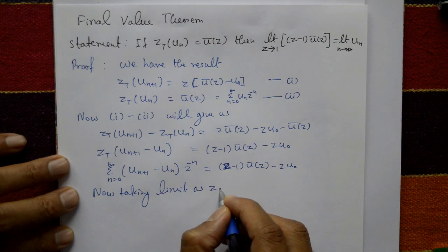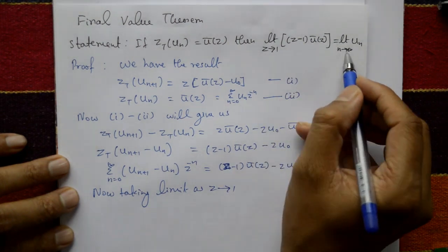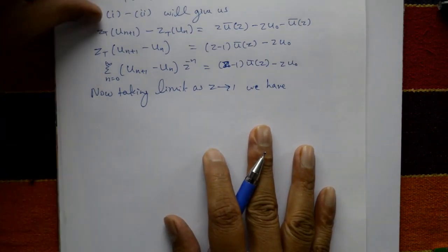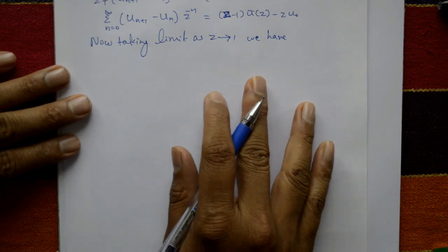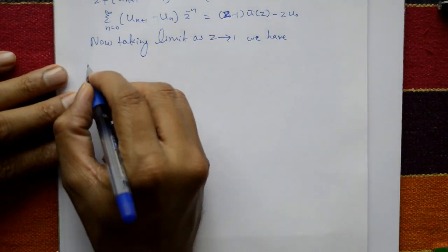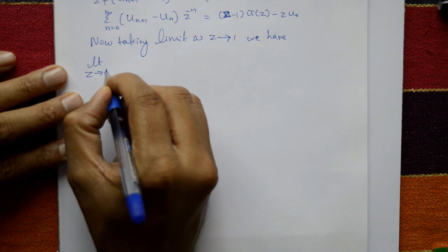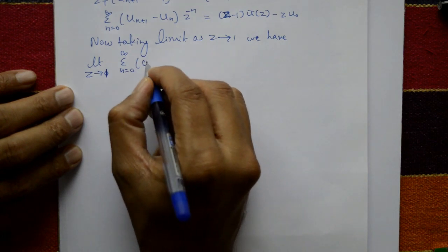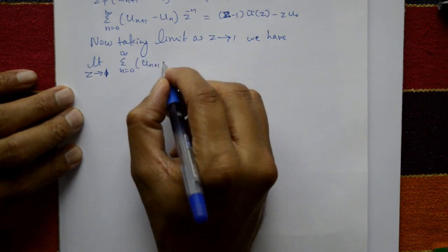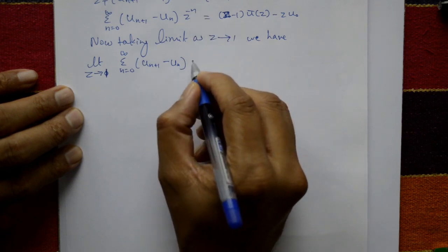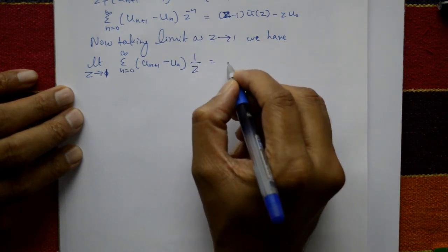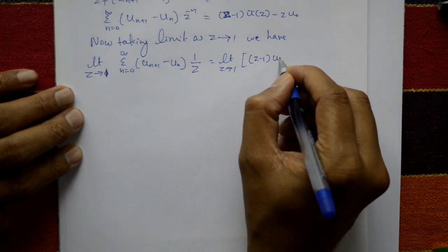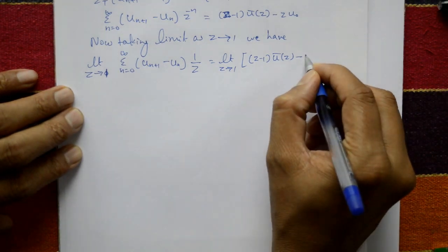Now taking the limit as z tends to 1, we have: limit as z tends to 1 of the summation from n equals zero to infinity of (u[n+1] minus u[n])·z^(-n) equals limit as z tends to 1 of [(z minus 1)·ū(z) minus z·u₀].